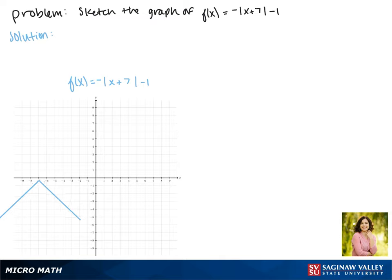When we subtract 1 on the outside, that moves our function down one space. So now the vertex is at negative 7, negative 1.